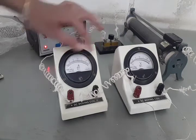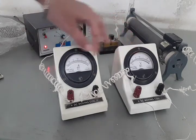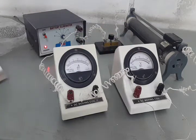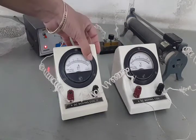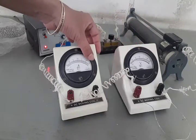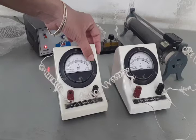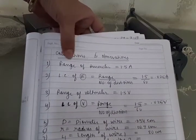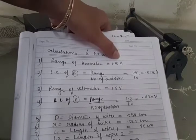Least count of both the apparatus are calculated by the formula range upon number of division. Range means the last reading of ammeter or voltmeter. So in the ammeter, the last reading is 1.5 written.